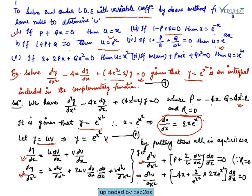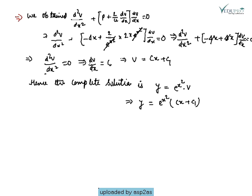Substituting all values into the linear form: d²v/dx² + [P + (2/u)·(du/dx)]·(dv/dx) = 0, since R = 0. Here P = −4x, and (2/u)·(du/dx) = (2/e^(x²))·2x·e^(x²) = 4x. So the term becomes −4x + 4x = 0, meaning the entire coefficient of dv/dx cancels out.